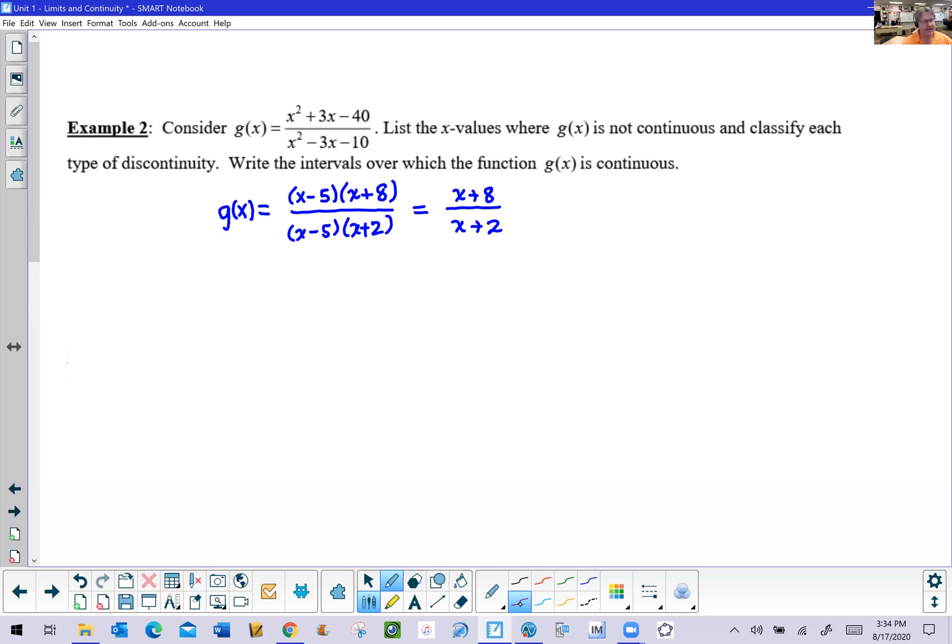So the bottom line is, anytime that you have denominators, you are going to have discontinuities. So there is certainly a discontinuity when x is 5. There's a discontinuity when x is negative 2. But we have to classify each type of discontinuity.